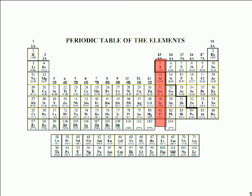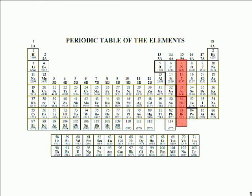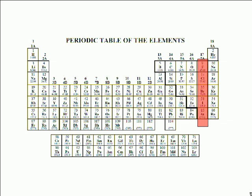Group 4a, or column 14 — carbon, silicon, germanium, tin, and lead — have a valence p subshell configuration of p2. For atoms in group 5a, or column 15, it's p3. For atoms in group 6a, or column 16, it's p4. For atoms in group 7a, or column 17, it's p5.